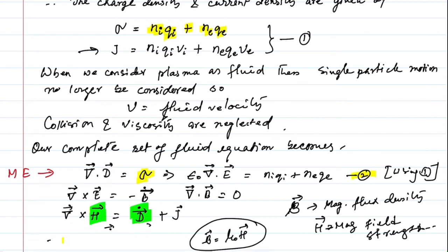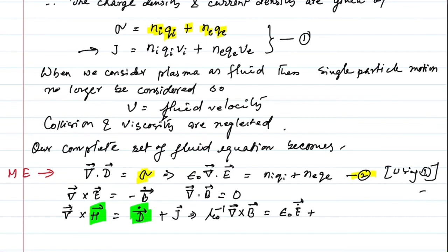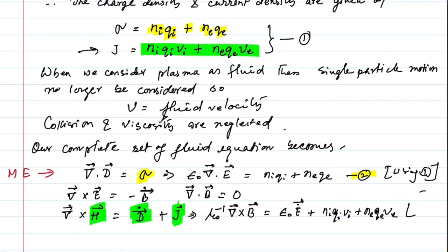After substitution, the equation becomes: mu-naught-inverse curl B equals epsilon-naught E-dot plus J. Here J is the current density, which can be replaced using equation number 1 as n_i q_i v_i plus n_e q_e v_e. This completes equation number 2 — the set of four Maxwell equations.